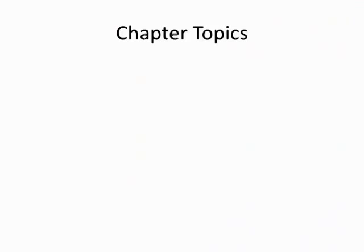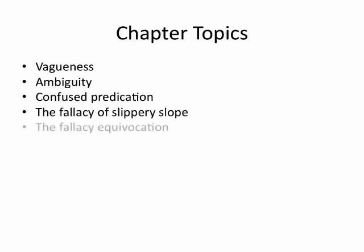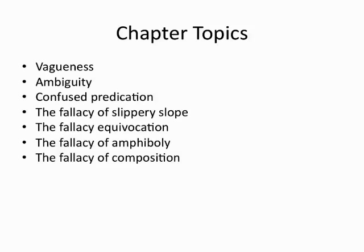Our topics in this chapter cover vagueness, ambiguity, and confused predication as the sources for a toxic stew of fallacies, including slippery slope, equivocation, amphiboly, composition, and division.